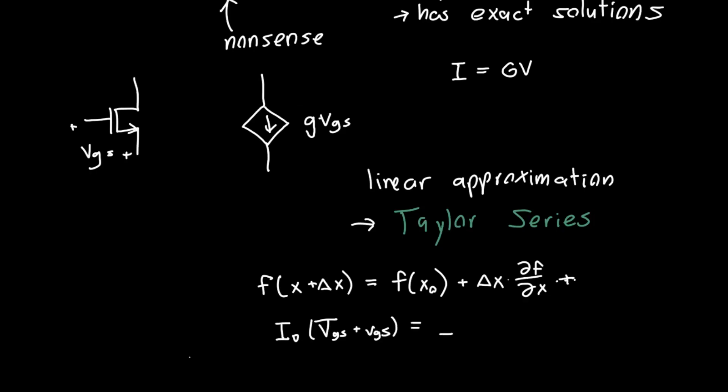Well, we know that that's going to be approximately equal to, if we Taylor expand this, just the drain current at your big VGS plus delta VGS times the derivative of drain current with respect to VGS.